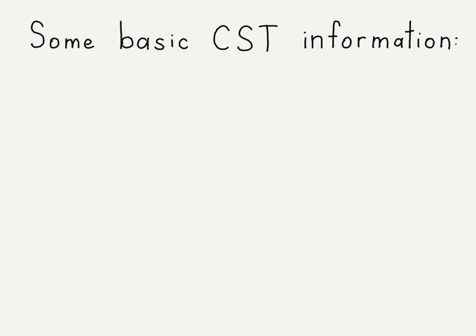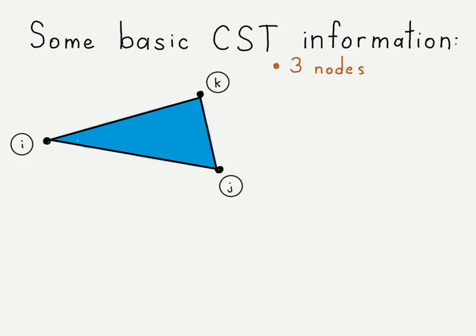First, let's look at some basic information about the constant strain triangle element. We have three nodes, and note that the ordering is counterclockwise. That is consistent with any type of planar element — the node ordering within the element will always be counterclockwise. The actual global numbers might be whatever, but within the element they will always have the counterclockwise order.